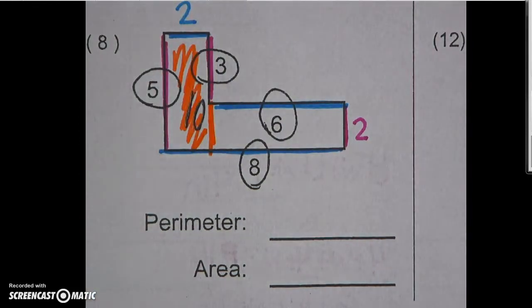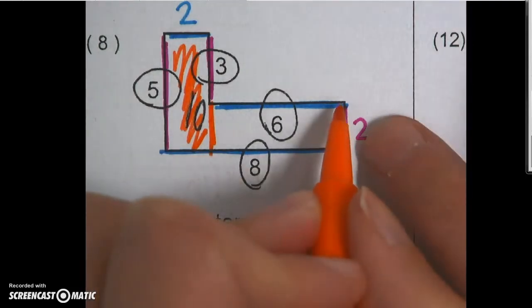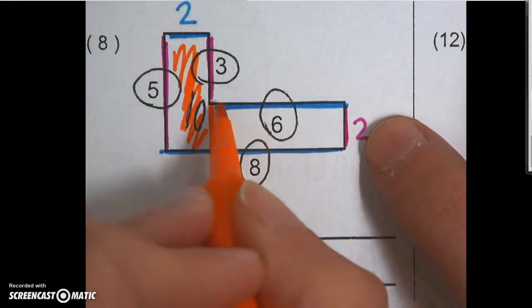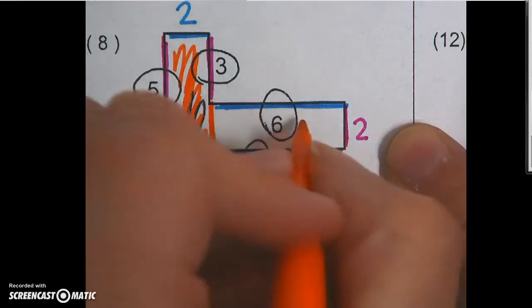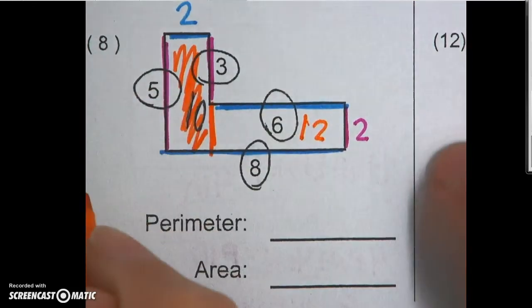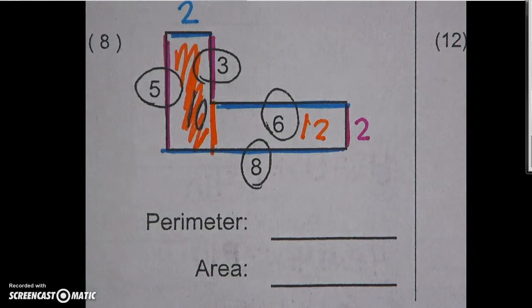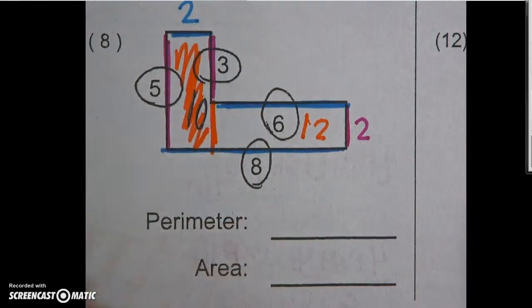And then my white rectangle has a width of 6, because it only goes to here, and a length of 2. 6 times 2 is going to give me 12. So when I add those two together, my area is 22.